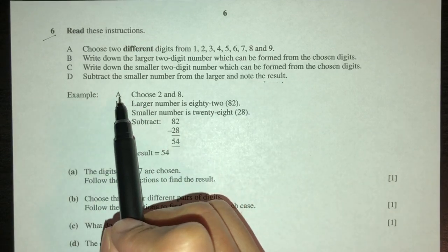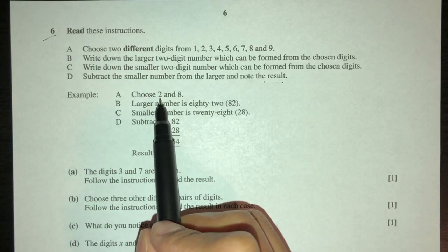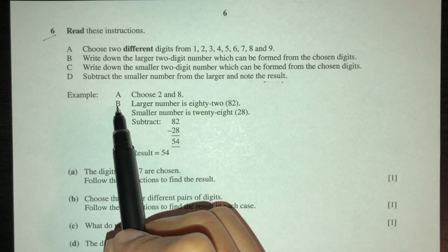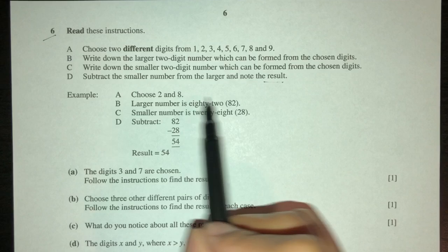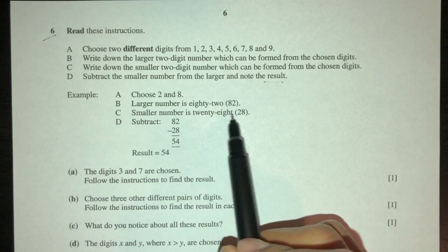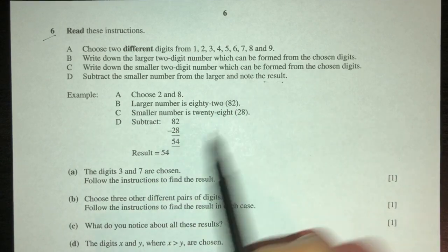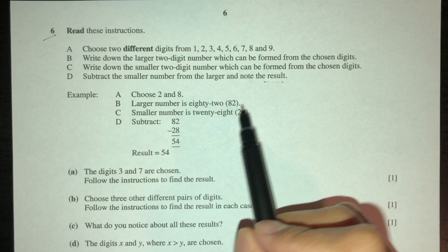So for example, here you can see part A chooses two numbers, which is 2 and 8. Part B, let's make a two-digit number, so the larger will be 82 and the smaller will be 28.